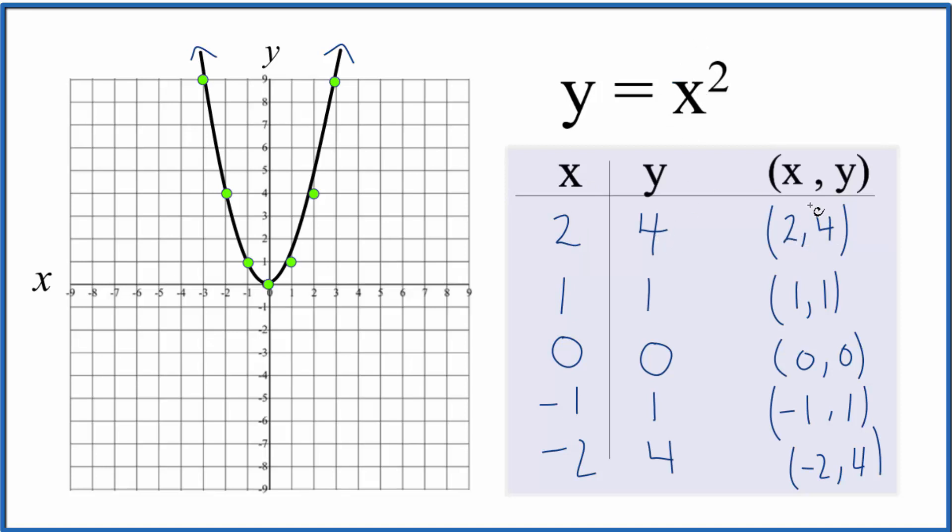Put 1 in for x, 1 times 1, 1 squared, that gives us 1. 0 would give us 0. Negative 1, a negative times a negative, that gives us a positive 1, and so on. So we took these values here, over here we graphed them on our graph paper.